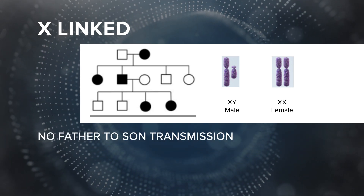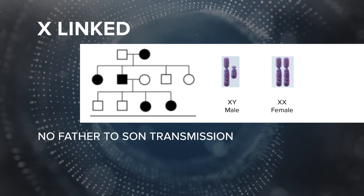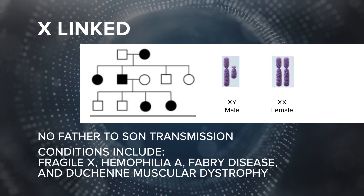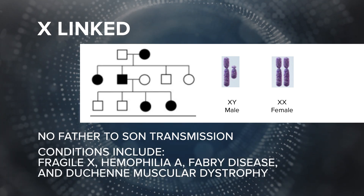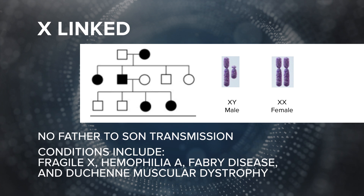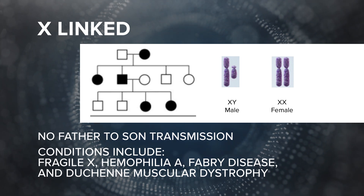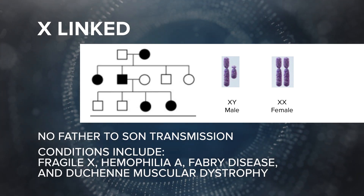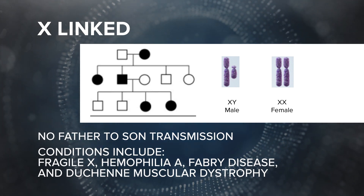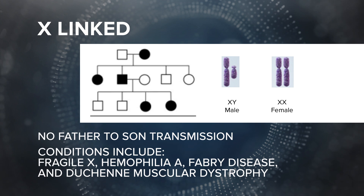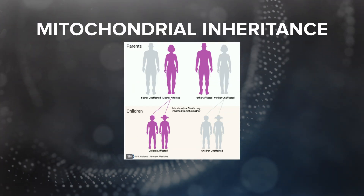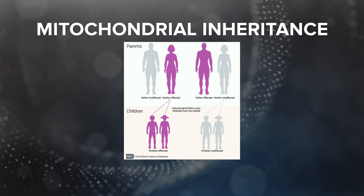Note that fathers cannot pass any X-linked traits to their sons. Conditions that follow an X-linked pattern of inheritance include Fragile X, Hemophilia A, Fabry disease, and Duchenne muscular dystrophy.